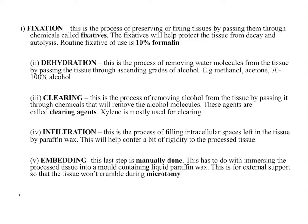I will give you an overview again. Fixation is to preserve the microscopic structure. Dehydration means to dehydrate it — we have to remove water molecules. Clearing is the removal of alcohol that is used as the dehydrating agent. Infiltration is filling the intracellular spaces formed due to clearing, dehydration, and fixation. Then we have embedding to provide support for cutting. This is all we are going to do in the automated tissue processing machine.